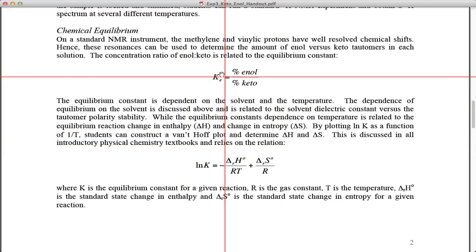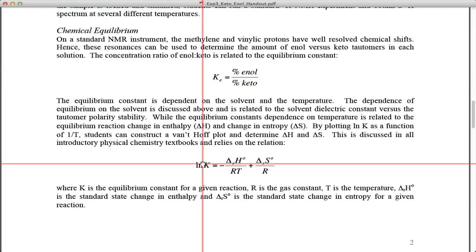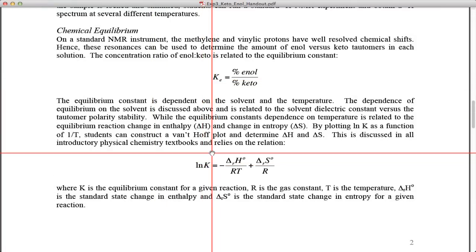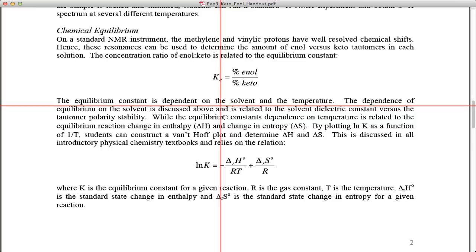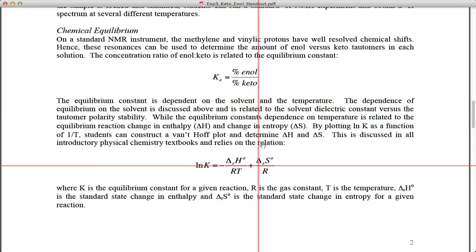The slope is related to your enthalpy and your y-intercept is related to your entropy, so we usually plot ln of K versus one on temperature to get the thermodynamic relations. We have our equilibrium directly so the ln of that is directly related to delta G, our Gibbs free energy. That's what we do as a function of temperature.